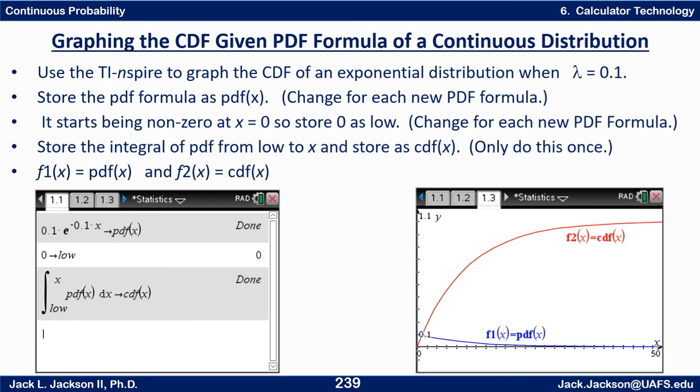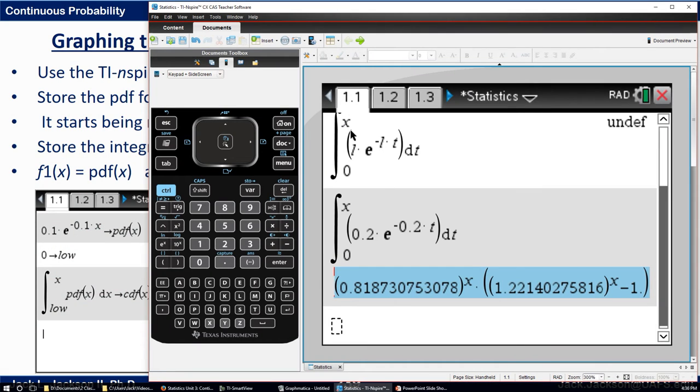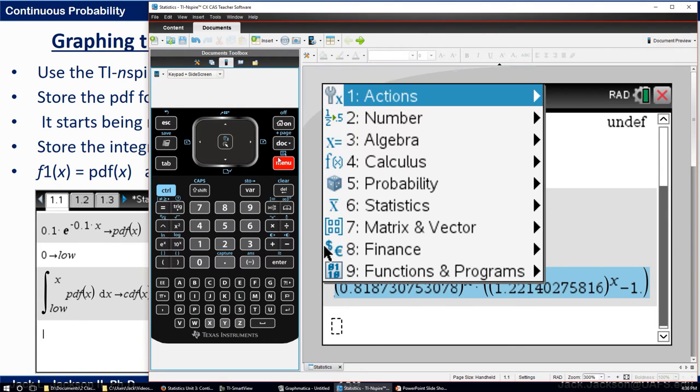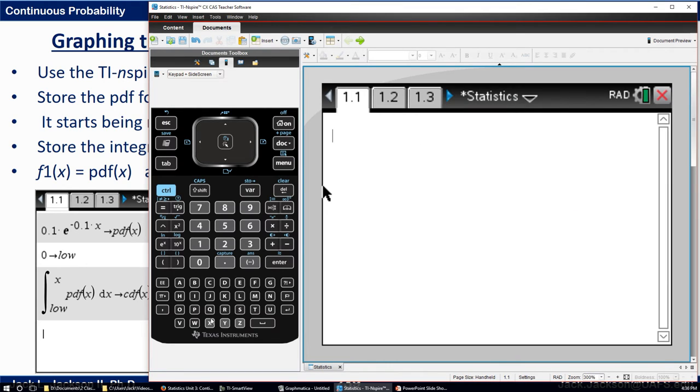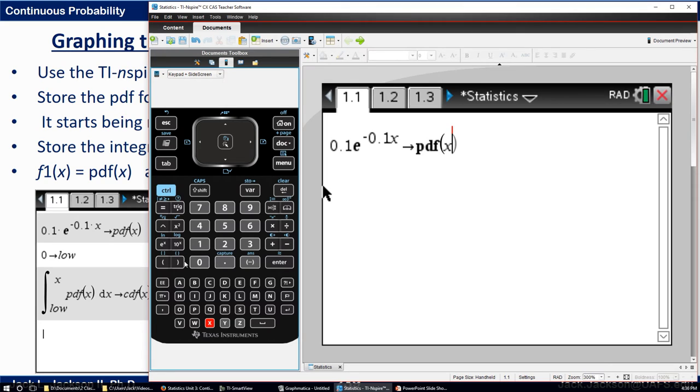So on an inspire, what I did is this. Let me just clear this out. What I did is I took my formula 0.1 e to the power negative 0.1 x and I store that control variable store it as that's the pdf. So I'm going to store that as pdf of x. Now, I'm going to store 0 as, I don't like to use a single letter l here. So I'm going to call it low. So I'm going to store that as low for my lower limit.